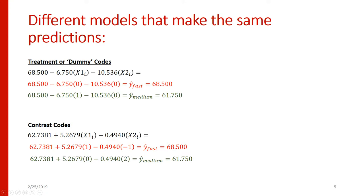Similarly, for the medium group: in the treatment-coded case they had a 1 for x1 and 0 for x2, whereas in the contrast-coded case they had a 0 for x1 and a 2 for x2. Multiplying those values by their respective coefficients and adding up gives us 61.75 in both situations — the mean for people in the medium-speed group. Again, we estimate the mean in that group, which gives us the smallest sum of squared errors for that group.